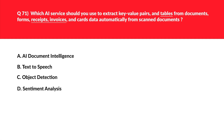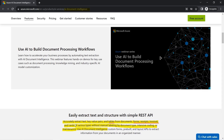Mark the keywords: whenever you see keywords like T-bills, receipts, or invoices in the question, think about AI Document Intelligence, which was previously known as Form Recognizer. The official documentation states it can accurately extract text, key-value pairs, and tables from documents, forms, receipts, invoices, and cards of various types.